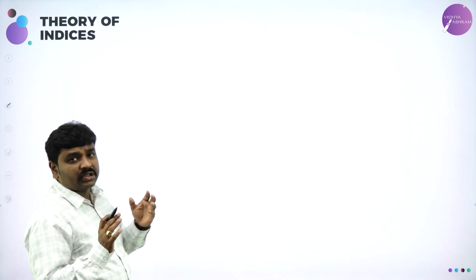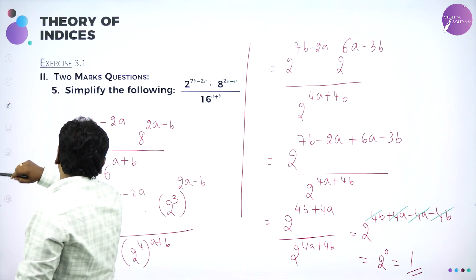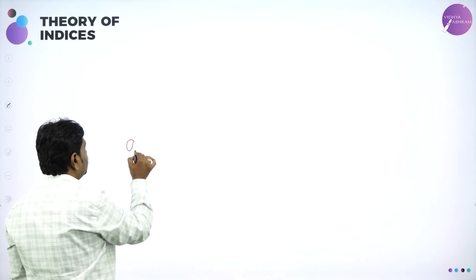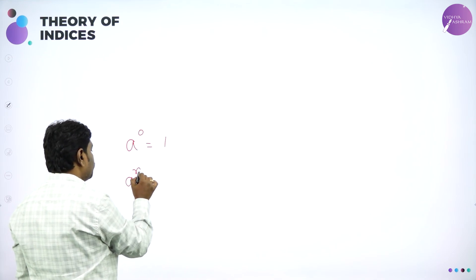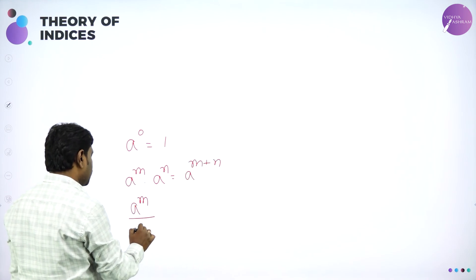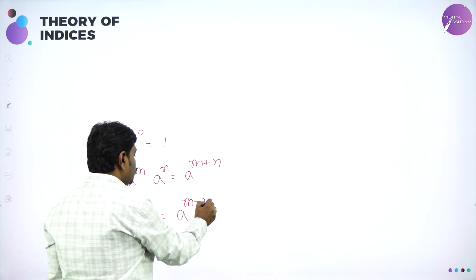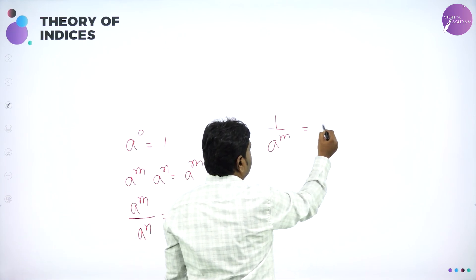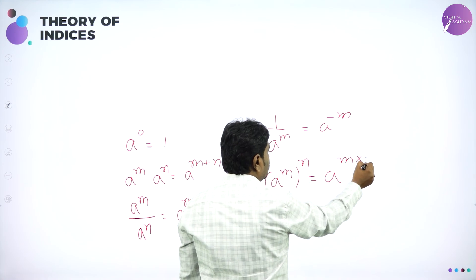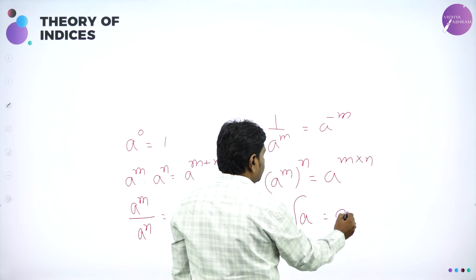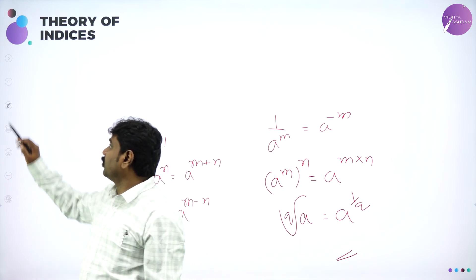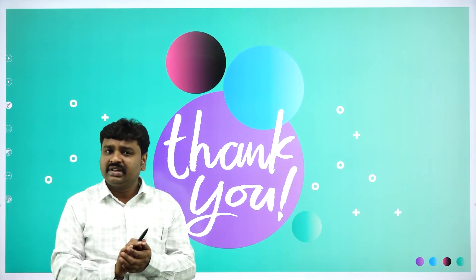In today's class we solved the problems of Exercise 3.1, completing five problems. All problems used laws of indices. Summary of formulas used: a power 0 equals 1; a power m into a power n equals a power m plus n; a power m by a power n equals a power m minus n; 1 by a power m equals a power minus m; a power m whole power n equals a power m into n; and qth root of a equals a power 1 by q. Practice these problems and we will go ahead with more problems in the next session. Thanks for attending.